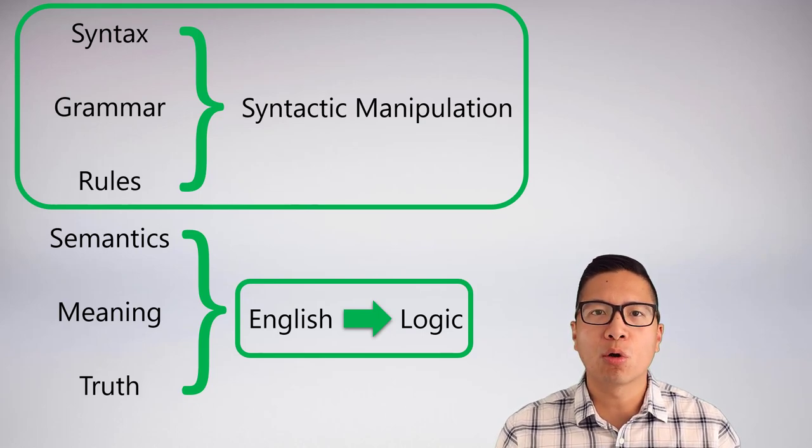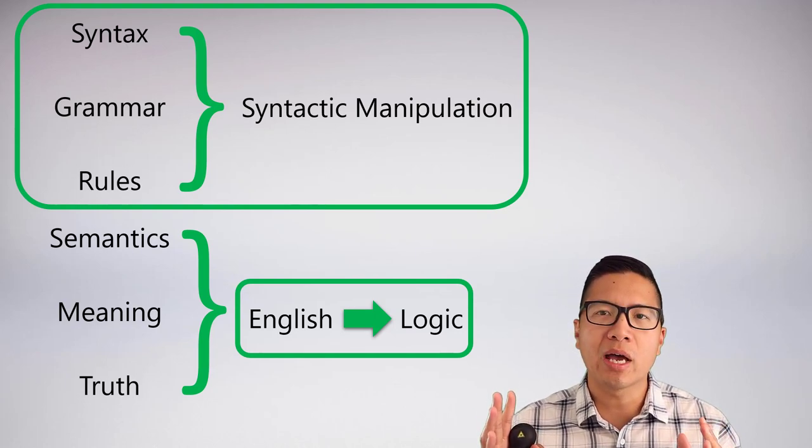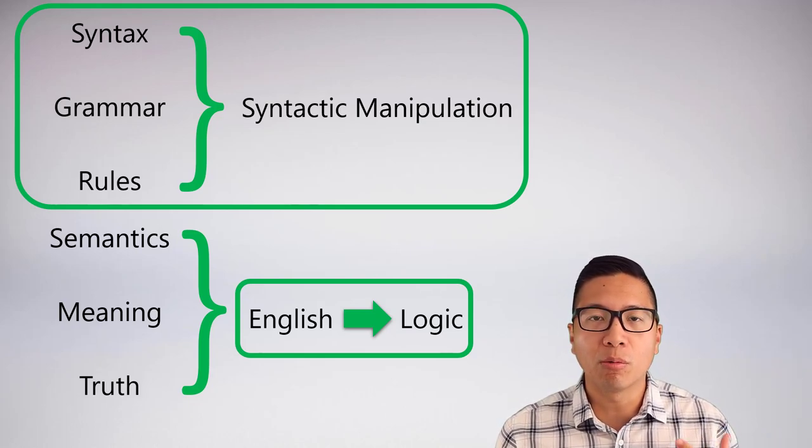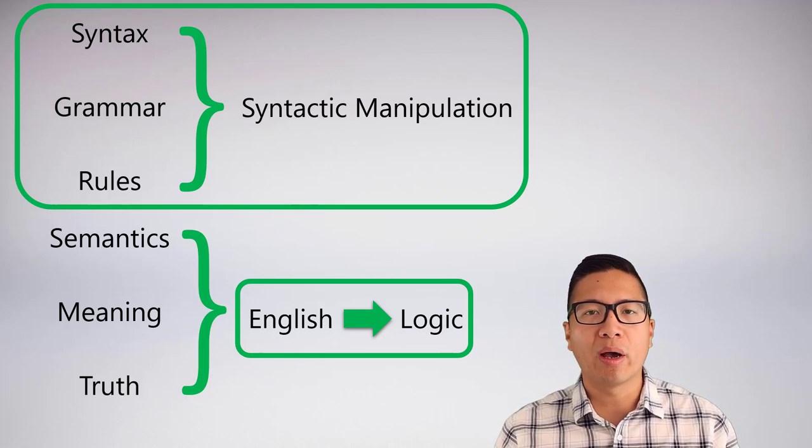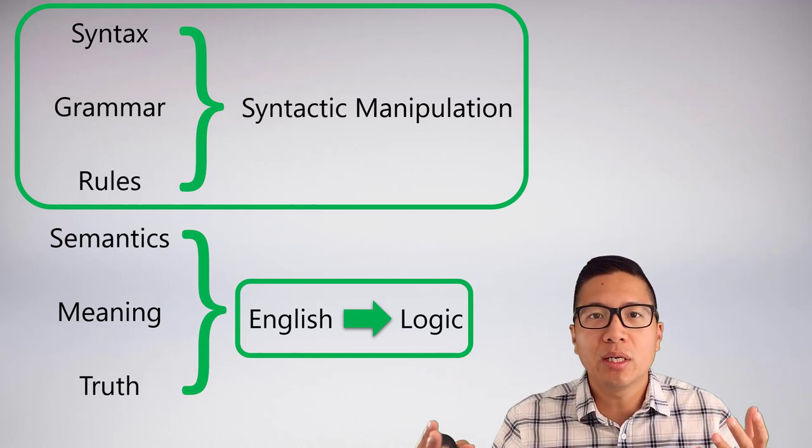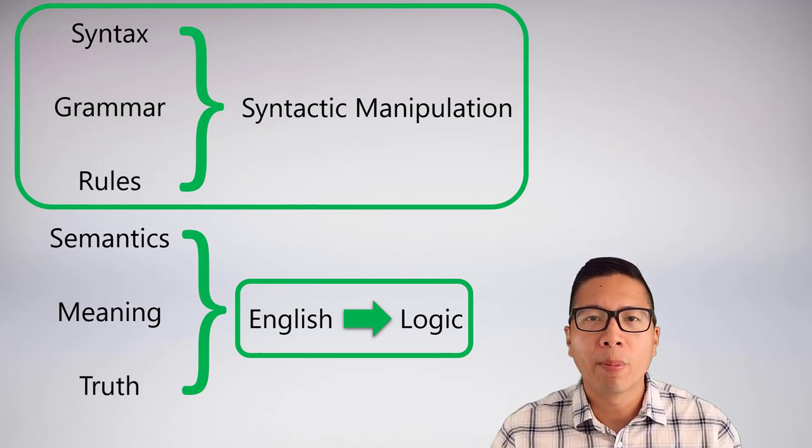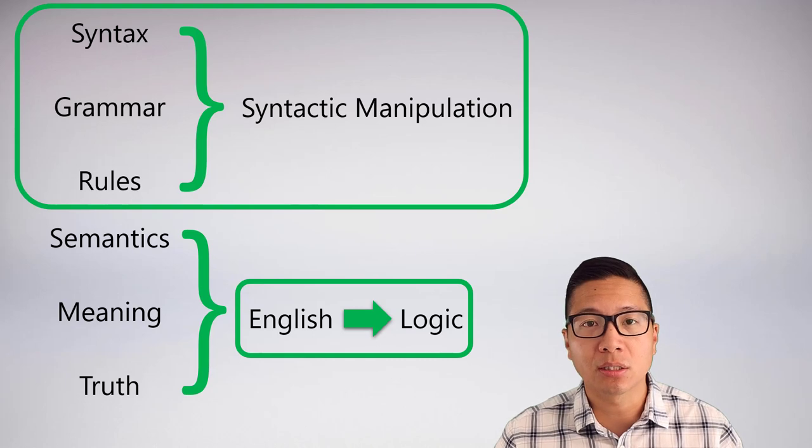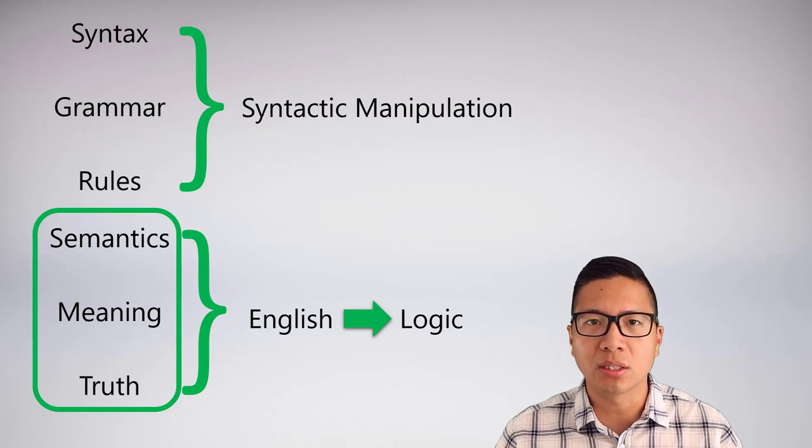Now the other thing that we did quite a bit was we talked about meaning, but only in one particular context. That context was about how to take English statements and translate them into logic. This is a very valuable skill, because when you go and read philosophical texts or have arguments with people, you will find yourself quickly symbolizing statements to realize they didn't say what they meant to say. But what we haven't focused on in quite a long time, actually since unit two, is the core issue behind semantics, which is truth itself.